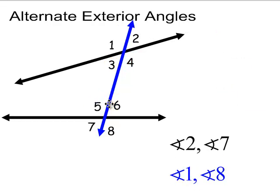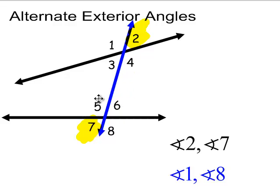For alternate exterior angles, once you identify the alternate interiors, you just fall outside to the vertical angles to find the alternate exterior pair. Angles 3 and 6 are alternate interiors, which makes angles 2 and 7 a pair of alternate exteriors. And since 4 and 5 are alternate interiors, that makes angles 1 and 8 a pair of alternate exteriors.